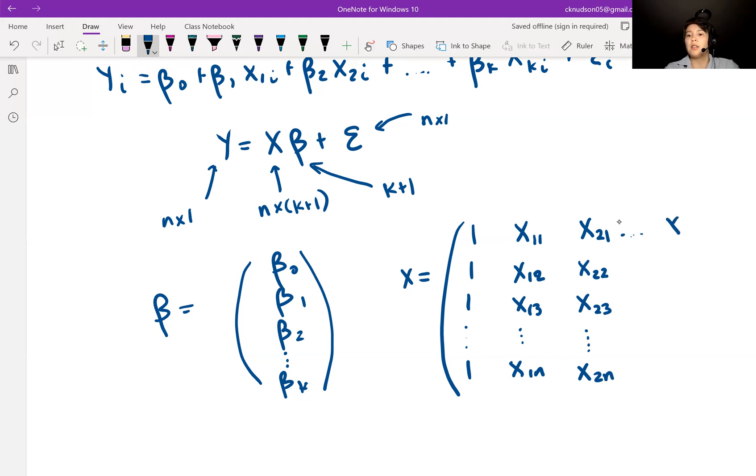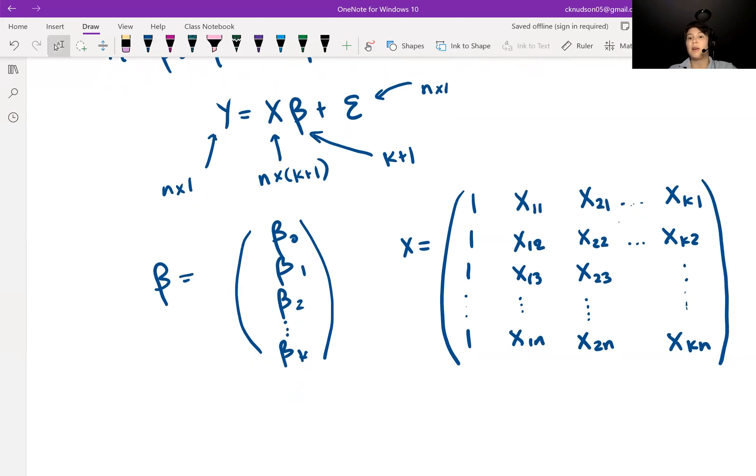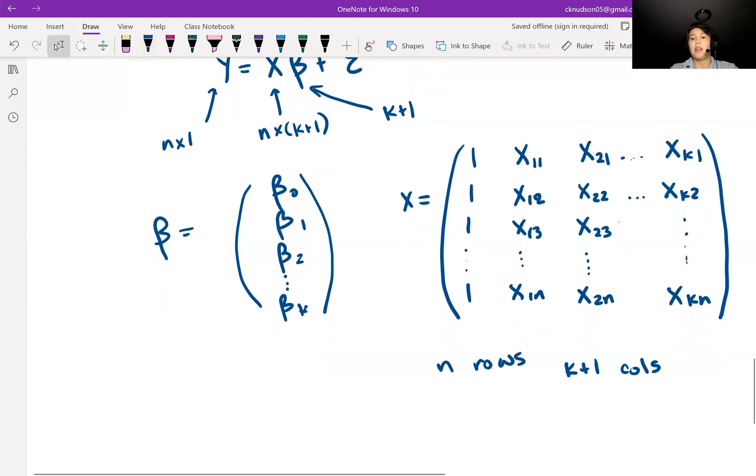And then we keep going like this until we get to the last variable, xkn. So this is saying it's the kth variable and the first person's data, xk1. And then we have xk2, all the way down to xkn. So we can see that we have k plus 1 columns and we have n rows.